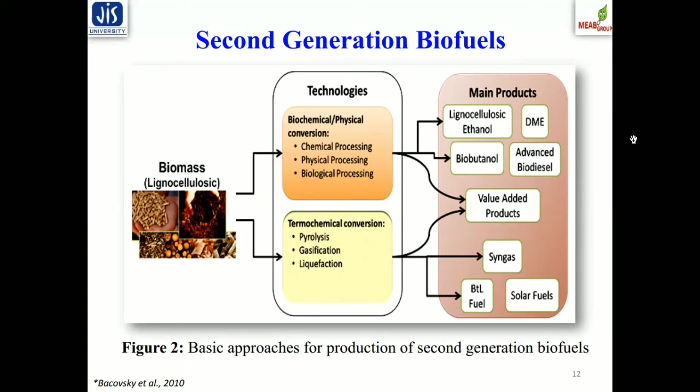The value-added main products that can be transformed from lignocellulosic biomass include lignocellulosic ethanol, dimethyl ether (DME), biobutanol, advanced biodiesel, syngas, aviation jet fuel, and solar fuel.